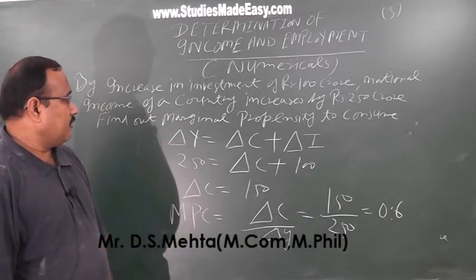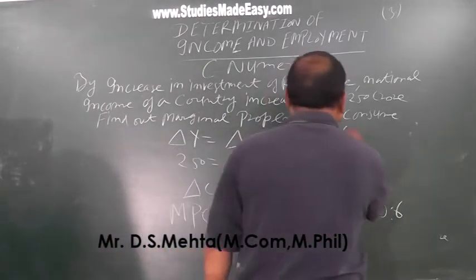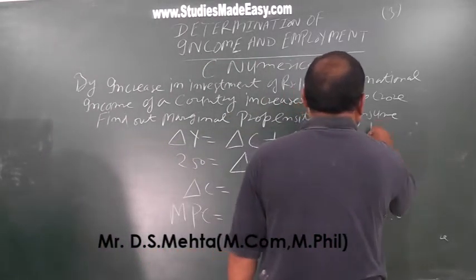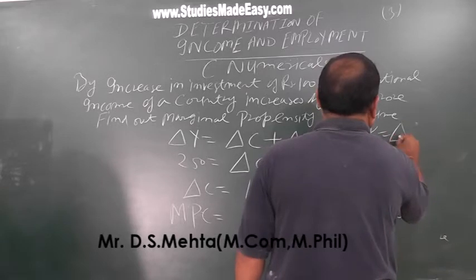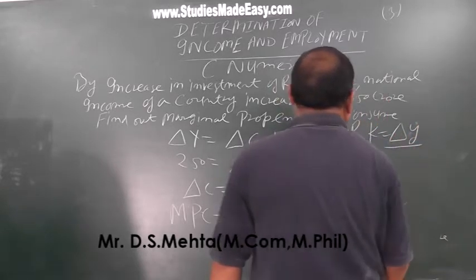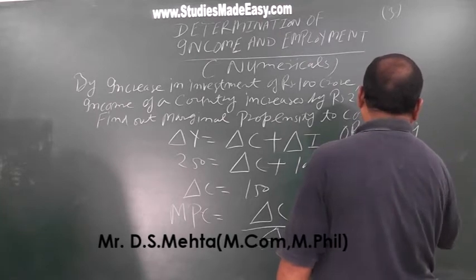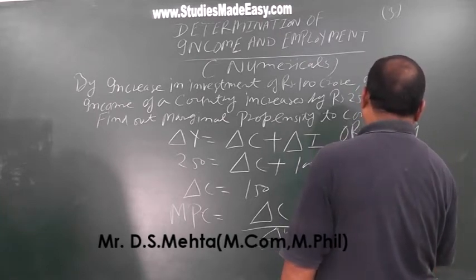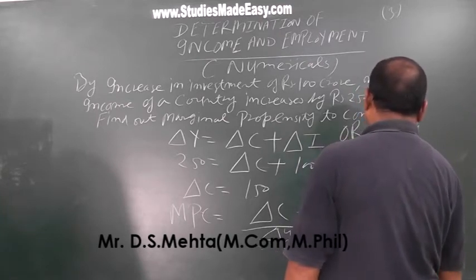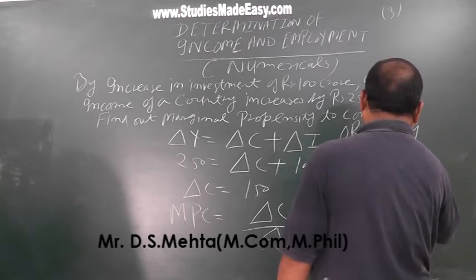और एक इसका formula है, इस step से भी कर सकते हो। K is equal to Delta Y upon Delta I। K की value निकाल लो पहले। K की value आजाएगी 250 upon 100, यानि कि 2.5।